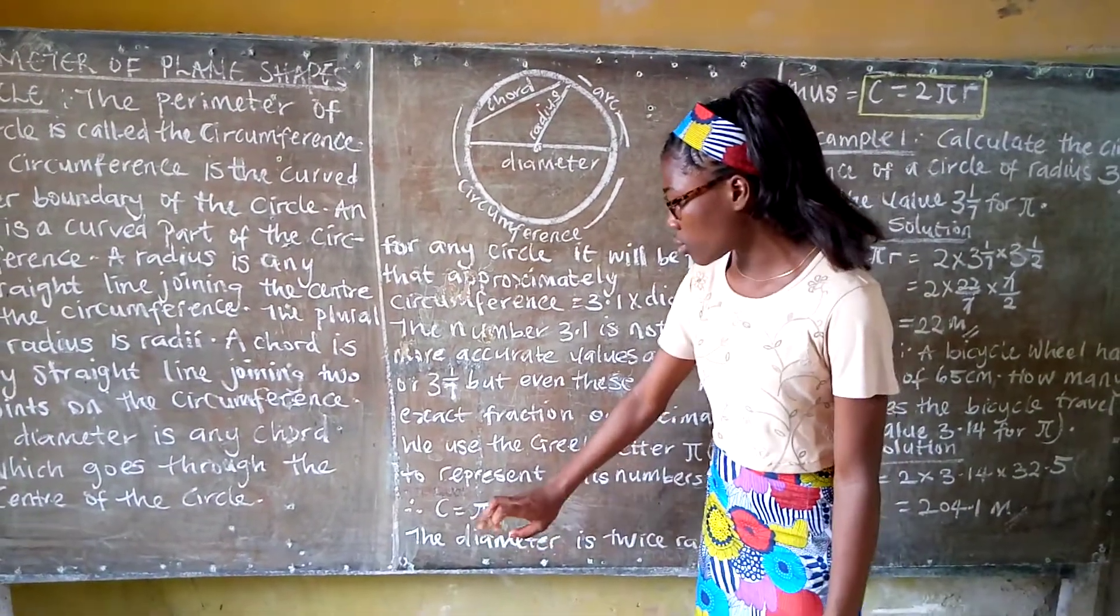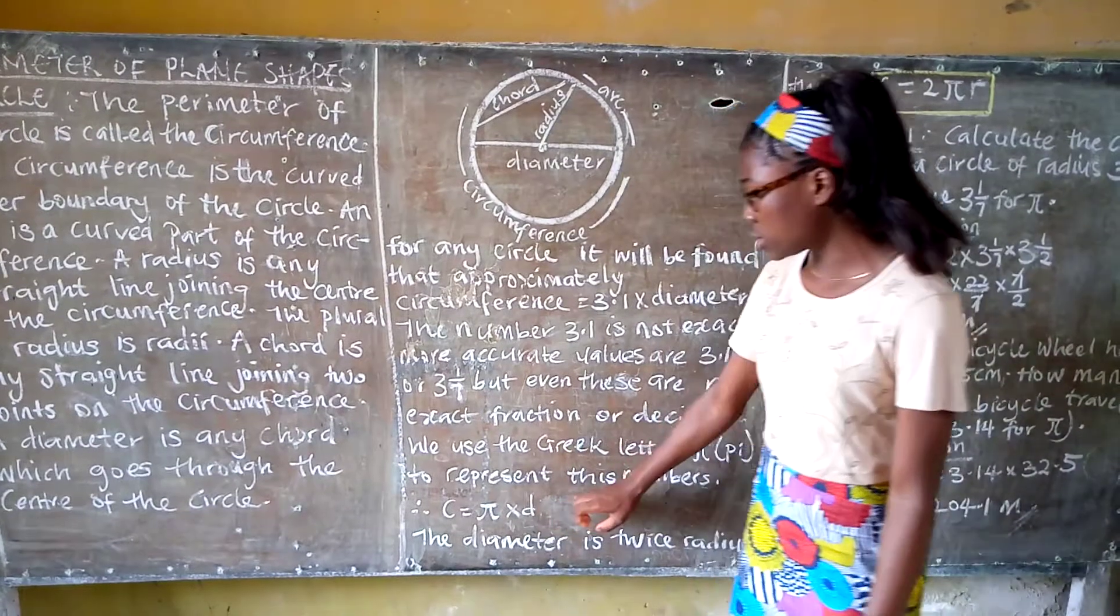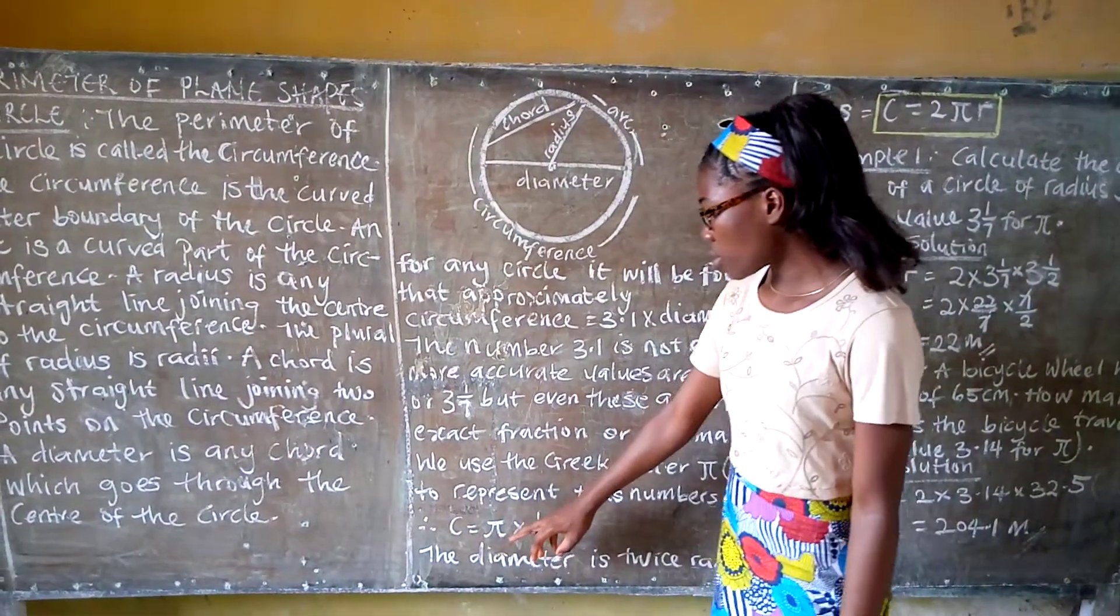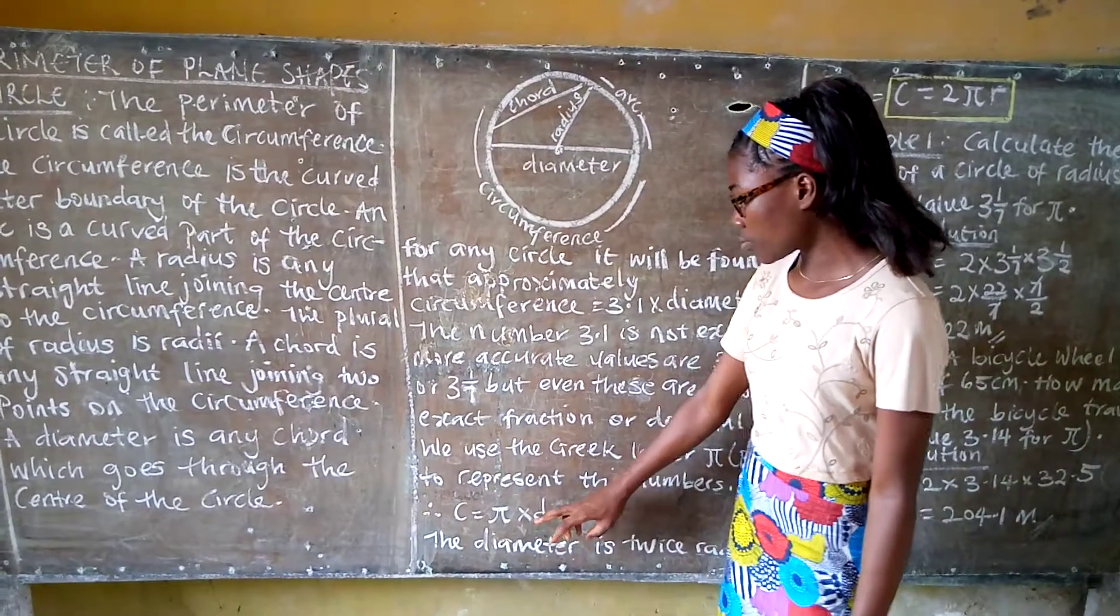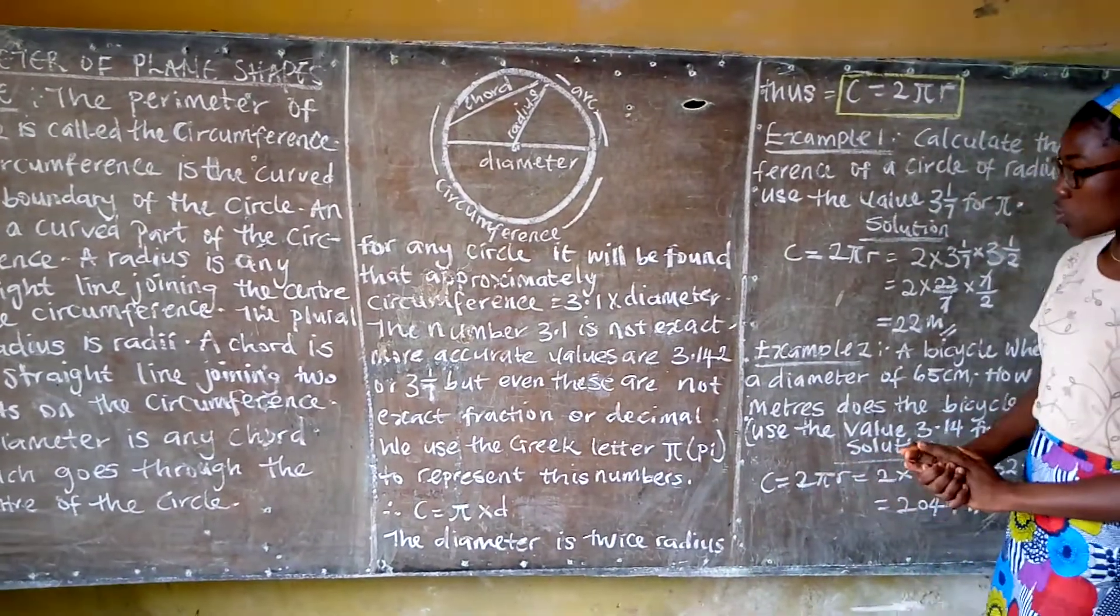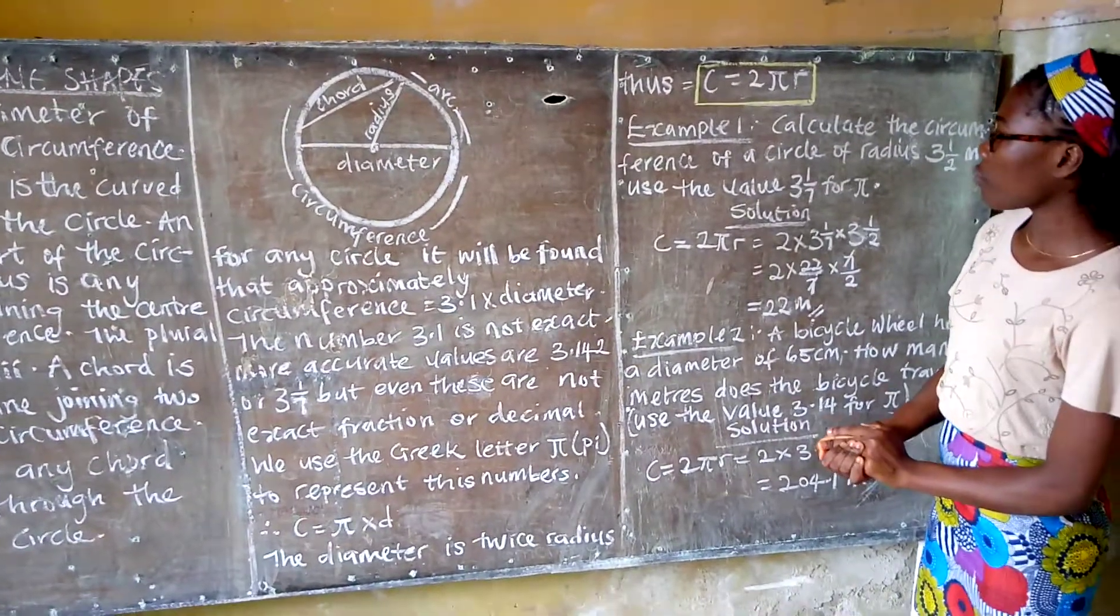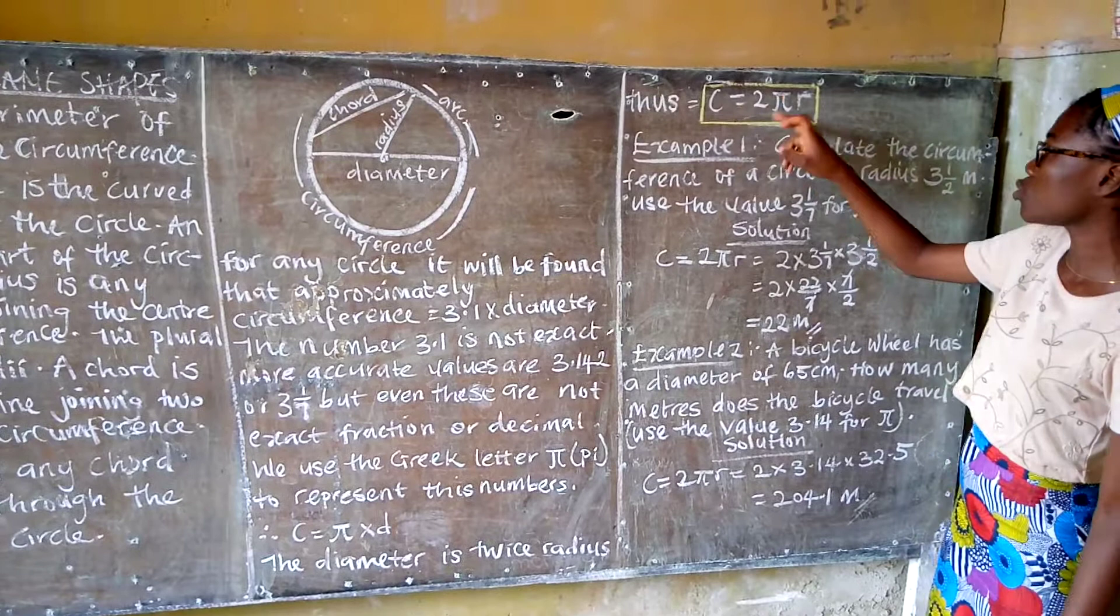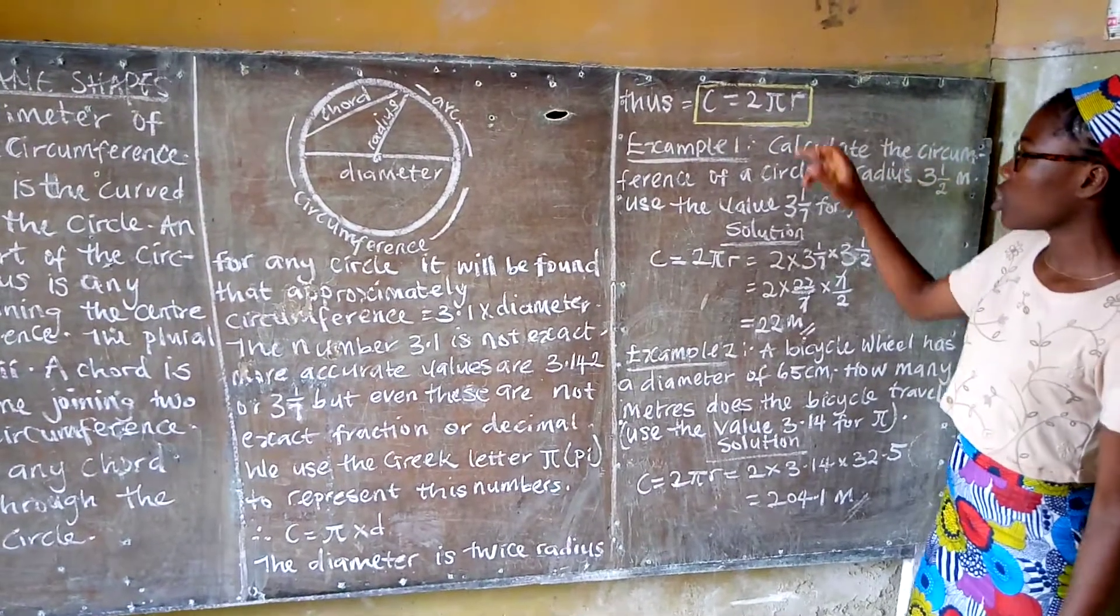Therefore, C = πD, where C stands for circumference and D is the diameter. Now the diameter is twice the radius. Therefore, C = 2πr. That is, circumference equals 2π times radius.